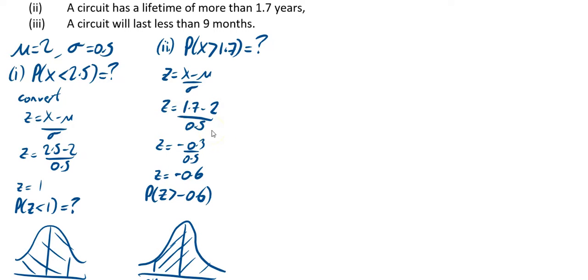Part three asks you to find the probability that a circuit will last less than nine months. First let's convert nine months to years. So nine months as a year is 0.75, three quarters of a year. So 0.75 years. We want to find the probability that X is less than 0.75. So again convert.